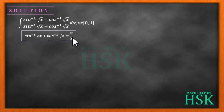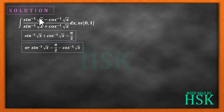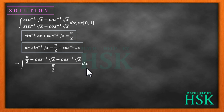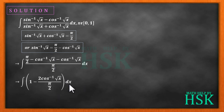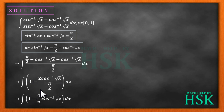First, we use the identity sin⁻¹√x + cos⁻¹√x = π/2, so the denominator becomes π/2. For the numerator, we write sin⁻¹√x = π/2 - cos⁻¹√x, giving (π/2 - cos⁻¹√x - cos⁻¹√x) / (π/2), which simplifies to 1 - (2cos⁻¹√x)/(π/2), and further to 1 - (4/π)cos⁻¹√x.